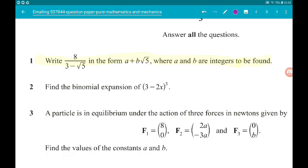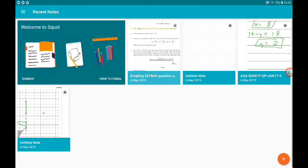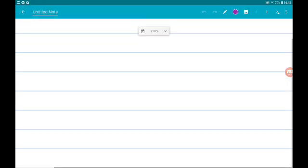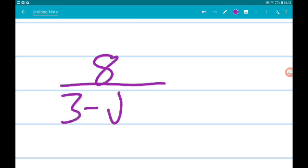Okay, so we've got 8 over 3 minus root 5. Now we need to rationalise the denominator.